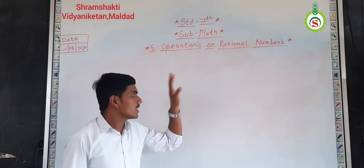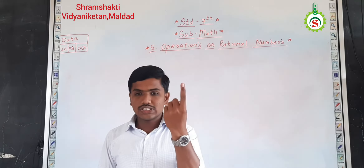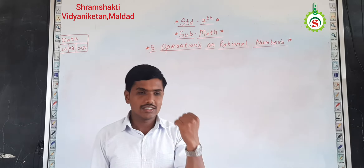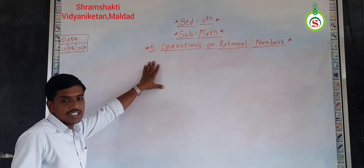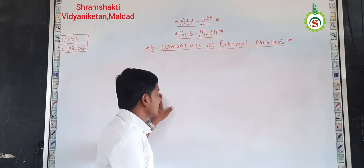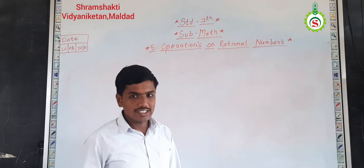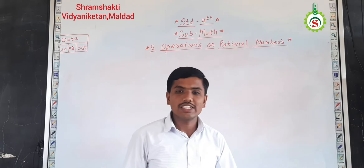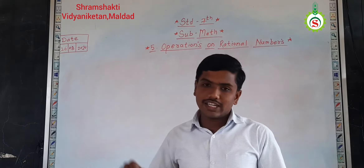Which are the operations which we can perform on the rational number? Four operations: first one addition, subtraction, multiplication and division. Out of that, two operations we have seen in the last lecture — that is addition of rational number and subtraction of the rational number. So, into today's lecture, we are going to see multiplication and multiplicative inverse of the rational number.